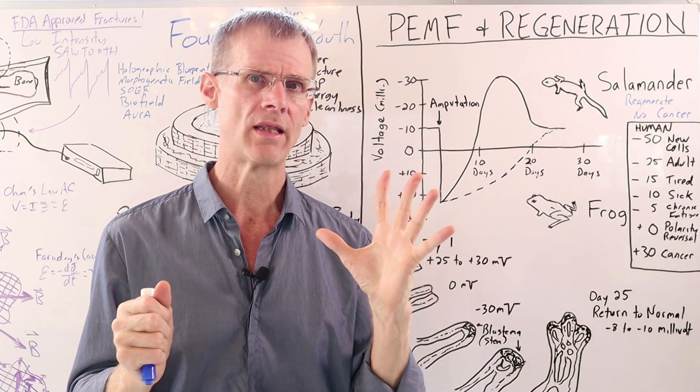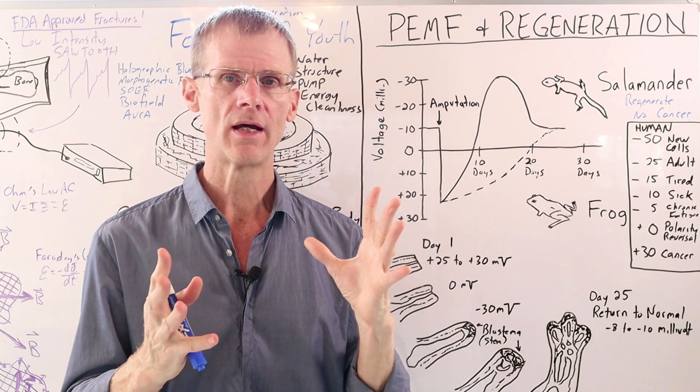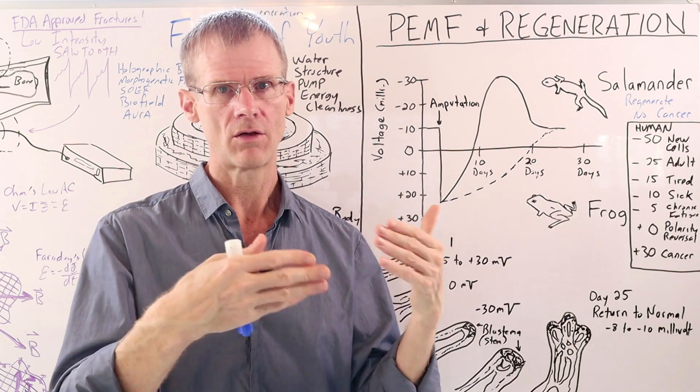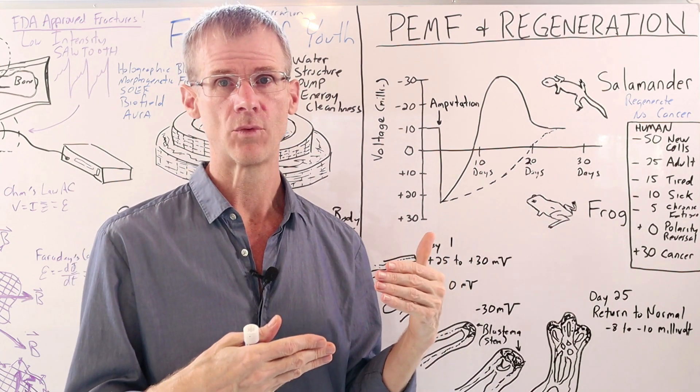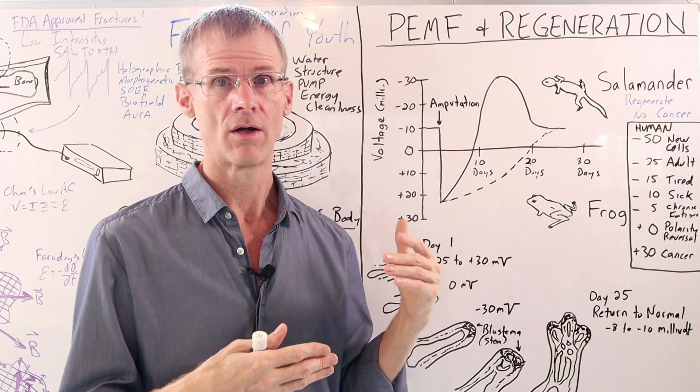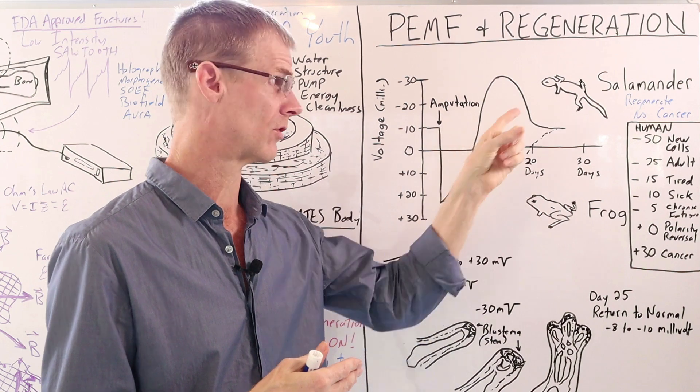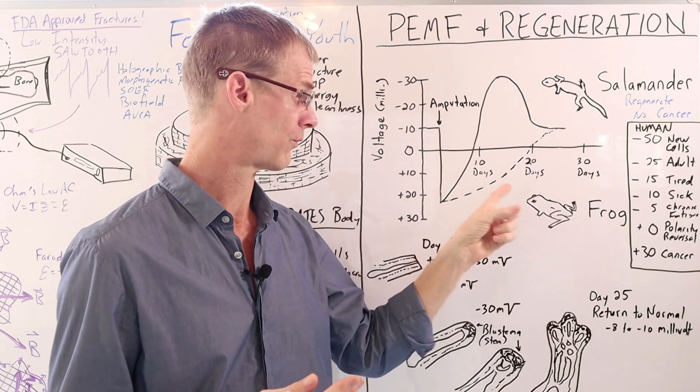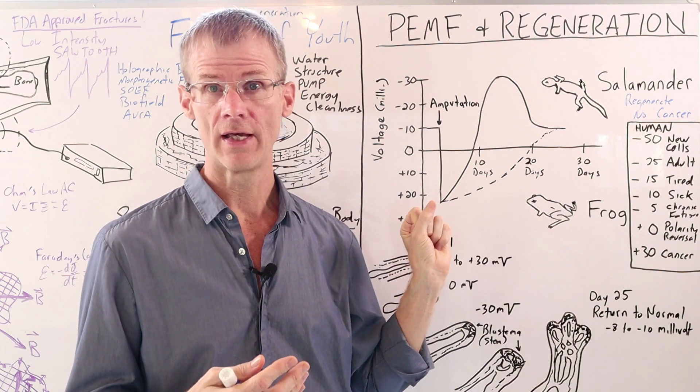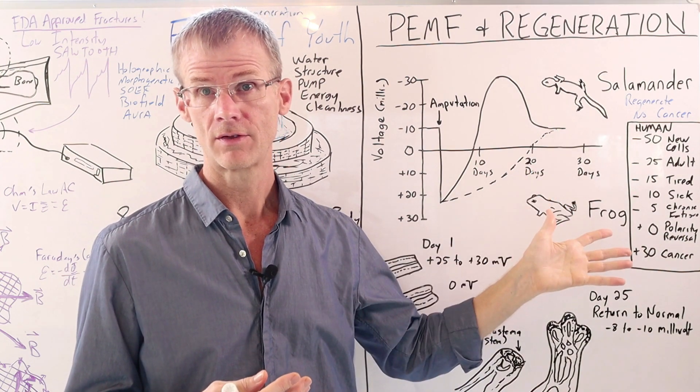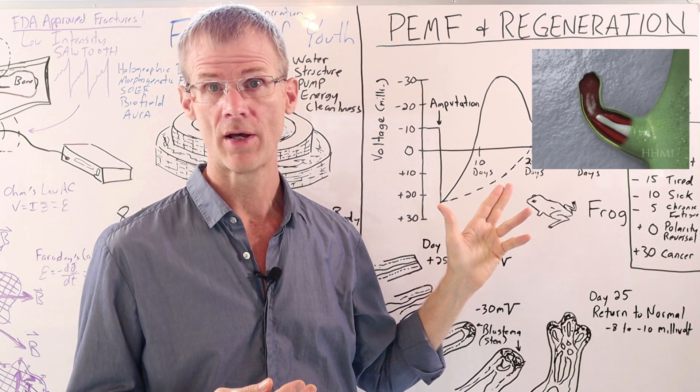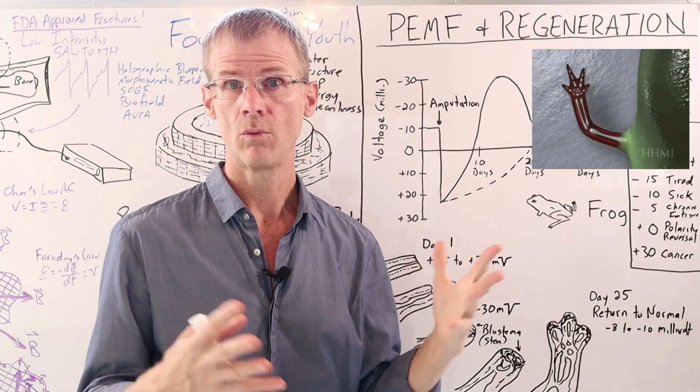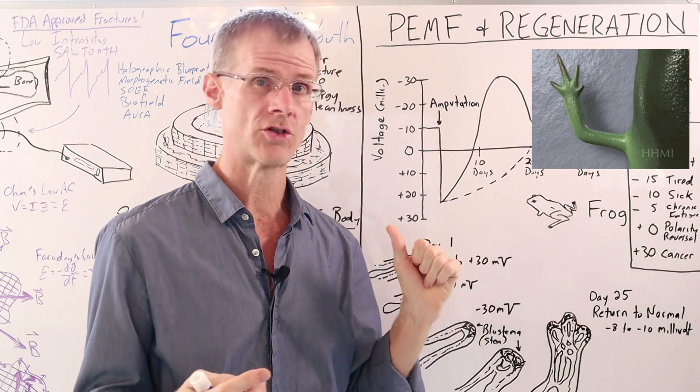Robert Becker was intrigued that bones could heal, but yet other tissues seem to just form scar tissue. So he went on a long journey to investigate regeneration and healing. And one of his main forms of research was studying the salamander because salamanders do regenerate, where frogs, which are closely related to salamanders in evolution, cannot. Meaning if you cut off a limb of a salamander, it will regrow. Where if you cut off a limb of a frog, it won't.